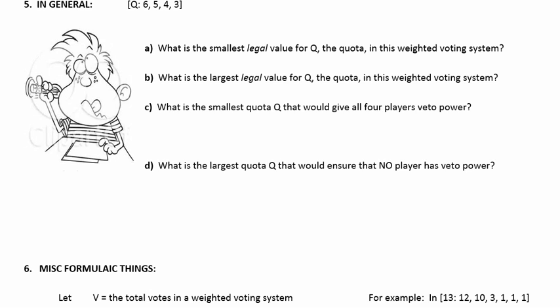So in this we have a weighted voting system that has a mystery quota. Quota is Q= 6, 5, 4, 3. Okay, so I don't know what the quota is, but I know Player 1 has 6 votes, Player 2 has 5, etc. And the first question is, what is the smallest legal quota for Q, or valid quota, in this weighted voting system?